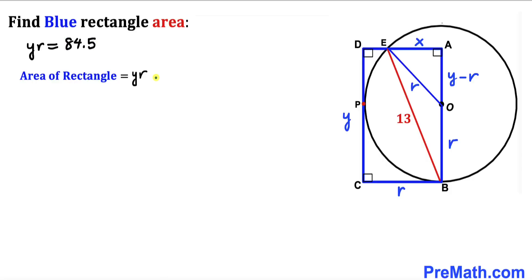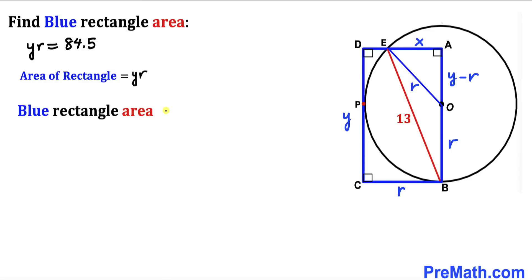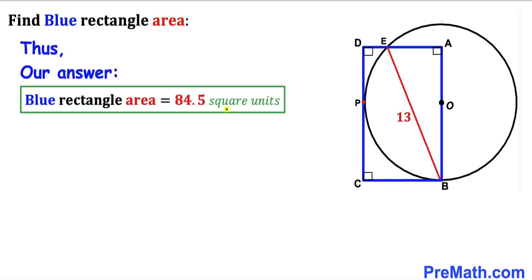Since the area of blue rectangle ABCD equals y times r, we conclude that the area of rectangle ABCD is 84.5 square units. That's our final answer.